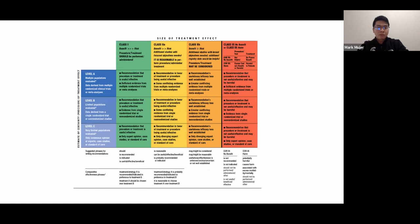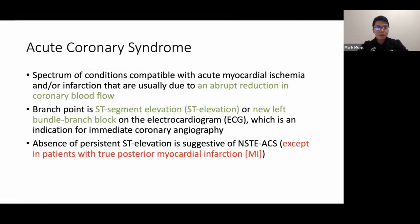The levels represent the strength of available data from trials. Level A evaluated multiple populations. Level B evaluated limited populations. Level C is only consensus of experts or case studies — very limited data.